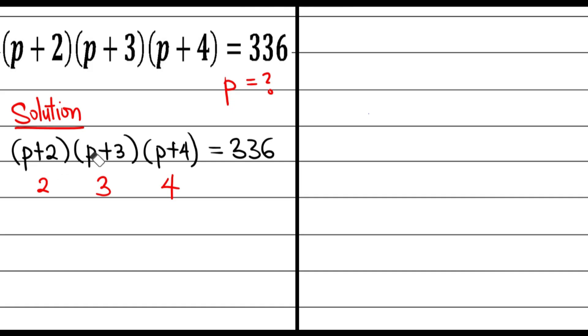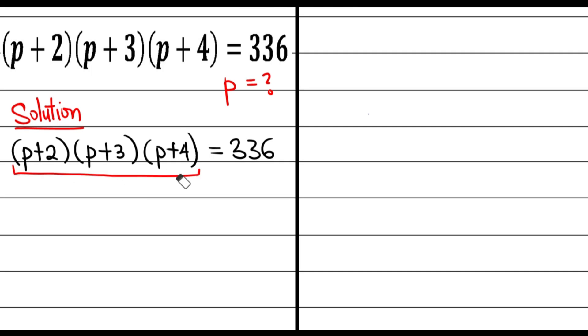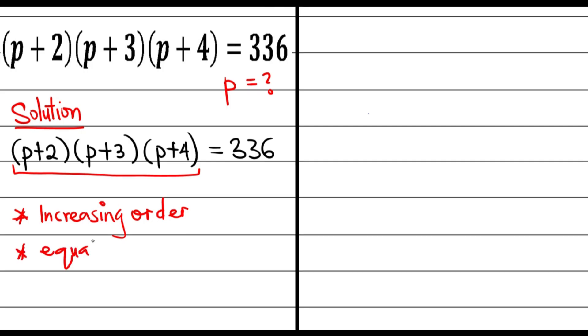That shows that the numbers follow each order accordingly. That simply means the numbers I'm going to multiply together on this left-hand side are just going to be in an increasing order. At the same time, it must be able to give me 336. Of course, yes, increasing order and at the same time equal to 336.